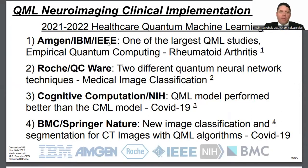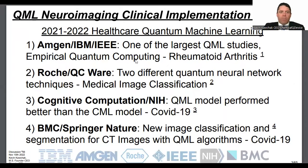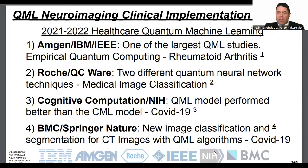I picked out four big healthcare quantum machine learning articles. The first is one of the largest QML studies, focusing on empirical quantum computing for rheumatoid arthritis. Quantum machine learning is actually the primary application for quantum computing. You'll see big names at the bottom — IBM, Amgen, Roche — using quantum neural networks, with Roche being a top 10 pharmaceutical and IBM in the Fortune 500.